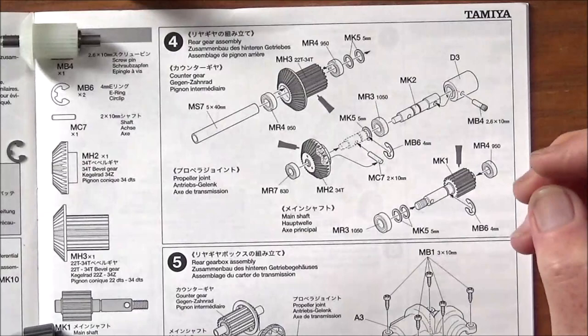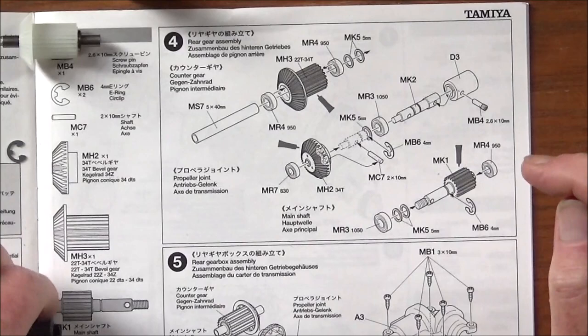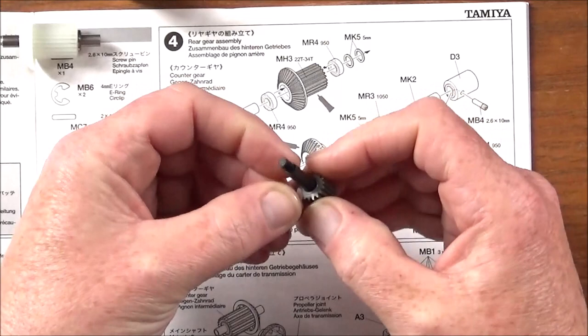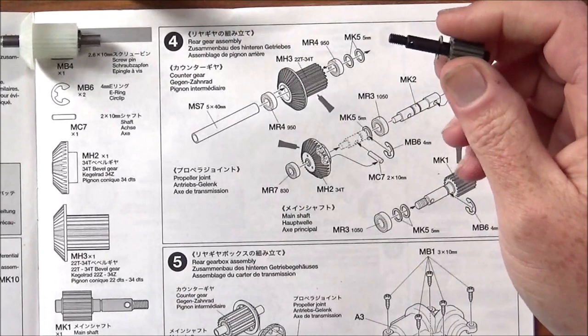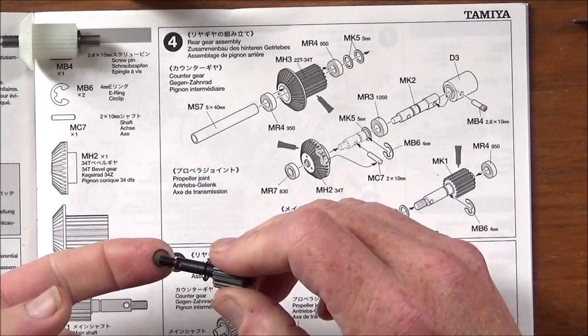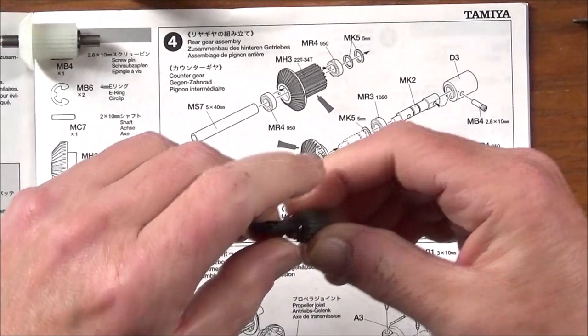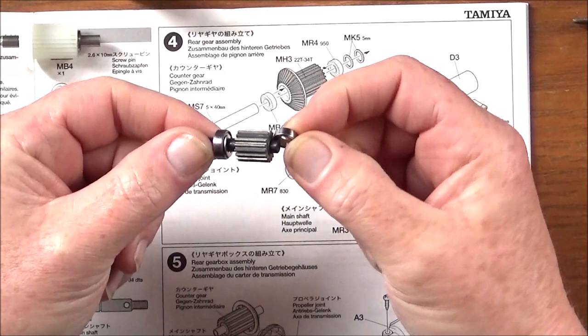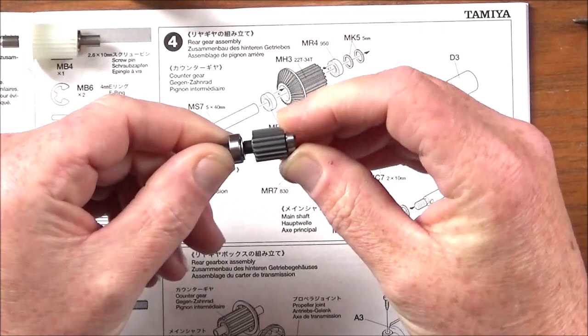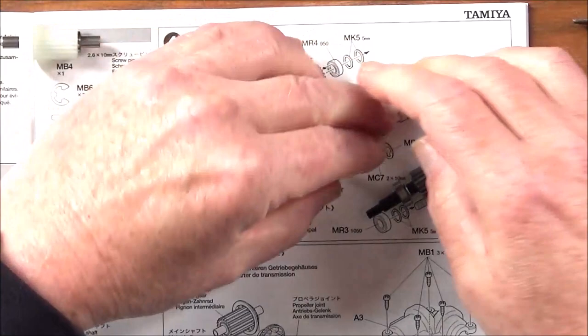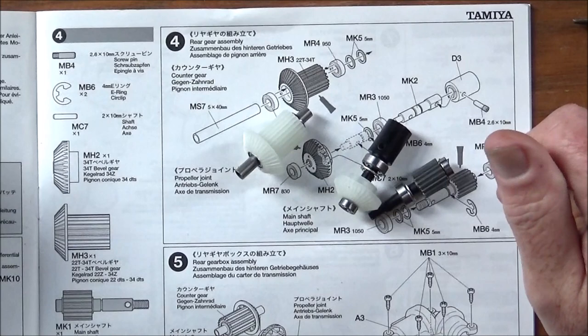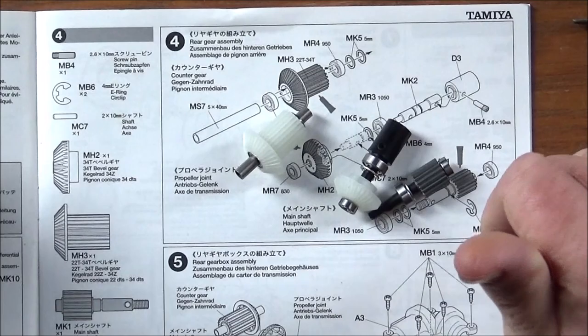And the last one in this section is the main shaft. Again, we take the main shaft. We've got MB6 E clip that goes over here. Then the last two MK5 shims. And the 1050 bearing. And then the last 950 bearing on that side. And there we have all three gears made up ready to go into the gearbox. And with that, I think I've gone on long enough for this episode. So we'll leave it there and look forward to seeing you on the next one. Thanks for watching. Bye.